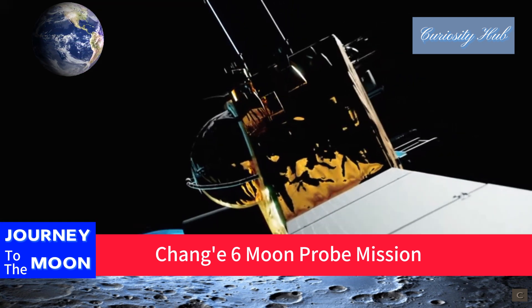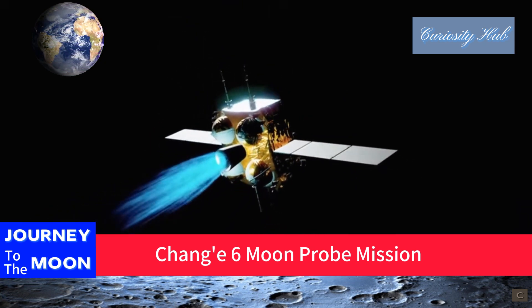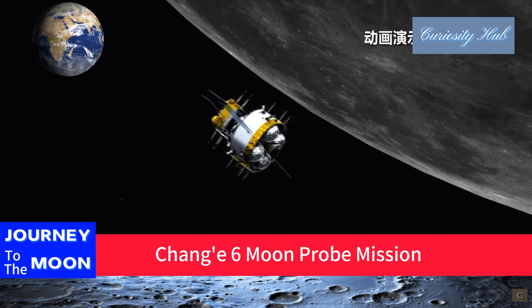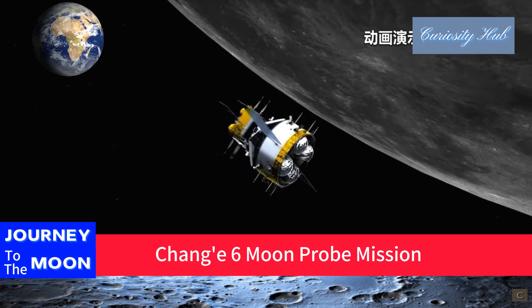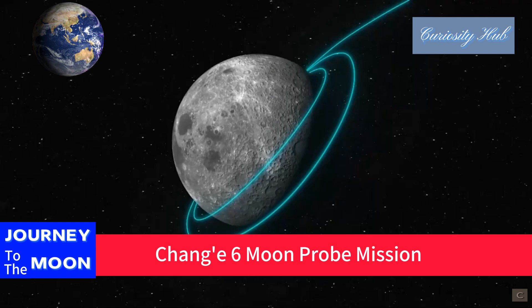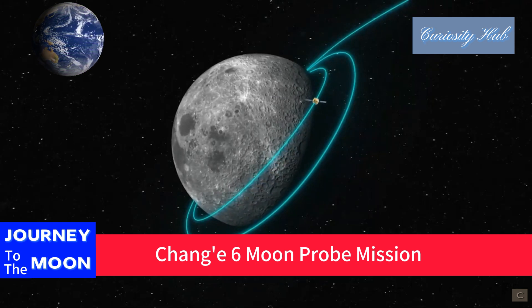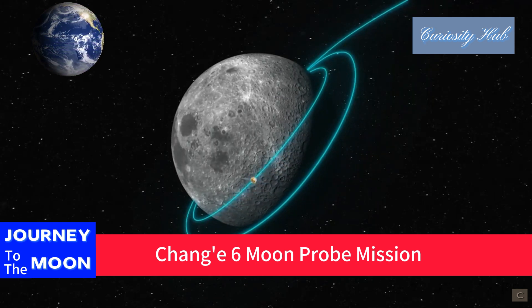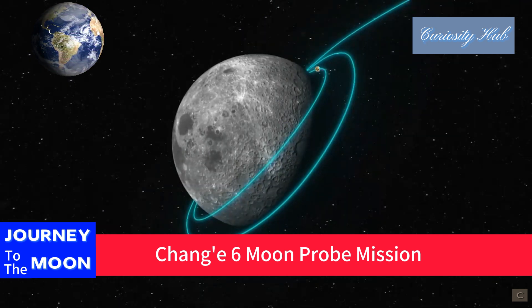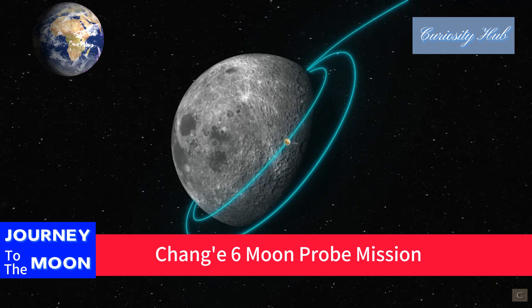After the rendezvous and docking, lunar samples will be transferred from the ascender to the returner. The orbiter-returner combination will then separate from the ascender and docking module, cruise in lunar orbit, and enter the ninth stage — the circumlunar waiting stage — waiting for the lunar-Earth transfer window. At the scheduled time, it will accelerate into lunar-Earth transfer orbit and begin the journey home.